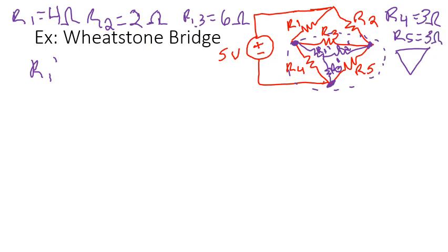So to find R1 prime, I go look in my delta to Y configuration. It says that it multiplies by the resistors that are just next to it. That's R3 and R4 on top of me. So R3 is 6 ohms and R4 is 3 ohms over my delta resistors all together. So that would be my R3 plus R4 plus R5.